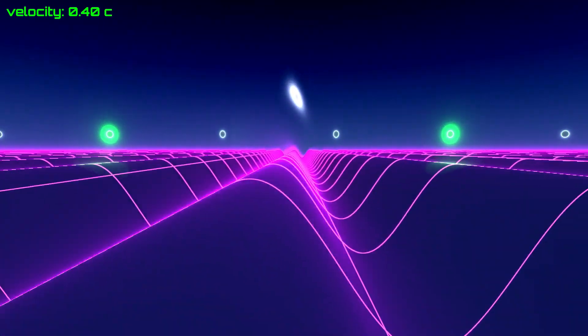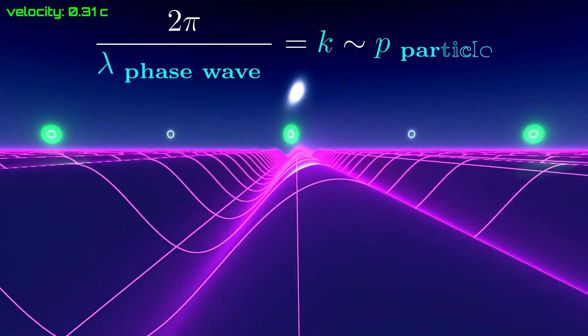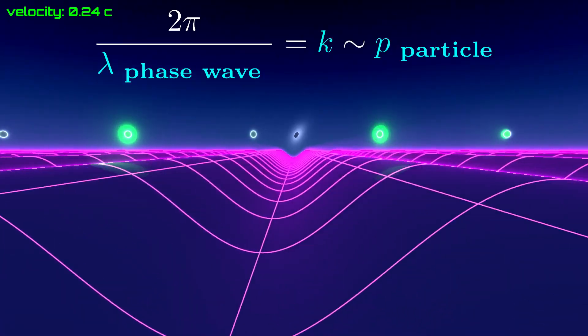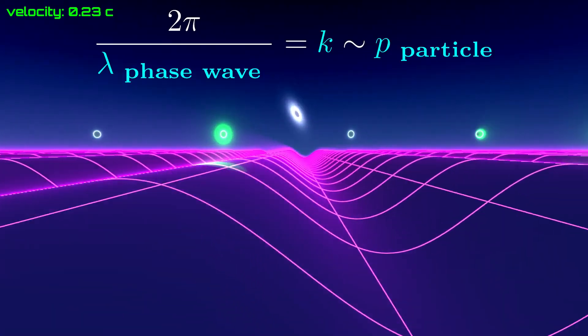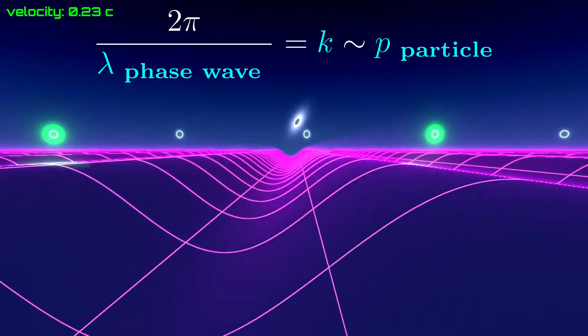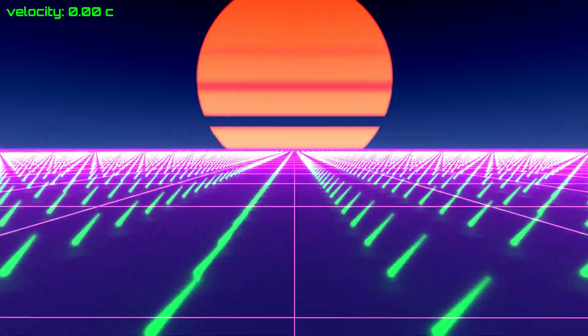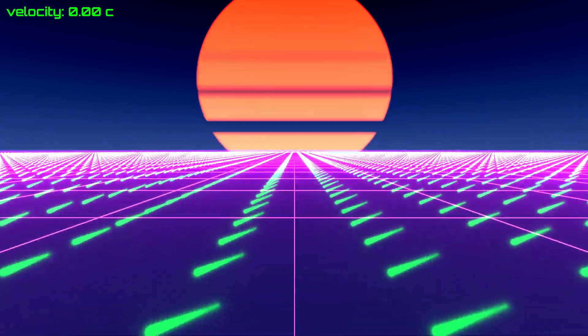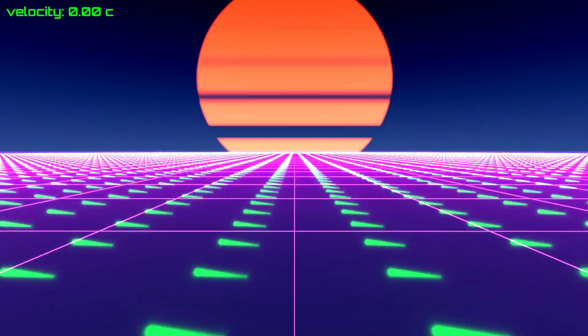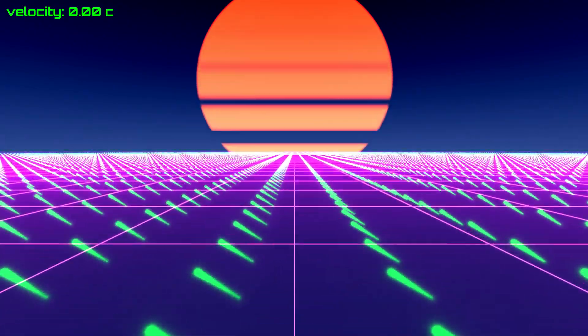But we will skip that proof and do something even better. We show that the wavelength of the ripples is related to the momentum of the particle. For simplicity, let us again zoom in, so to speak, on the stationary particle. Now, let us describe the situation with a two-dimensional spacetime diagram.